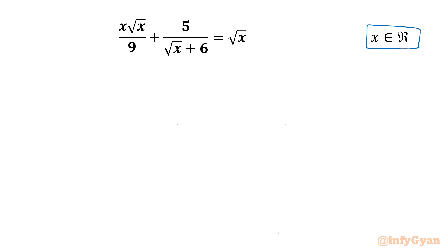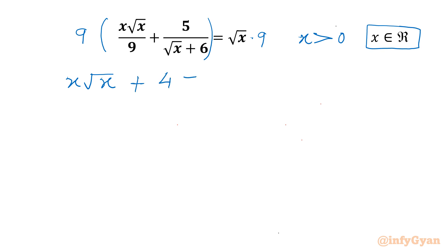Let's get started by writing x must be greater than 0 for real values. Now I will multiply both sides by 9. So we have 9 times (x√x + 45 divided by √x + 6) equal to 9 times √x.